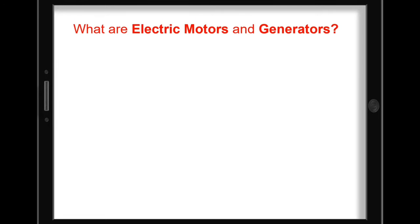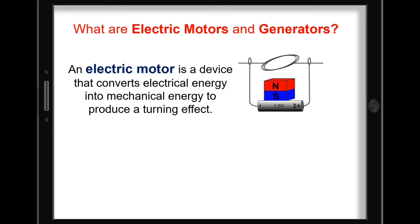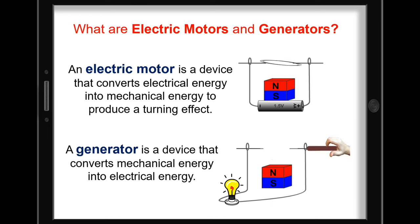What are electric motors and generators? An electric motor is a device that converts electrical energy into mechanical energy to produce a turning effect. While a generator is a device that converts mechanical energy into electrical energy.